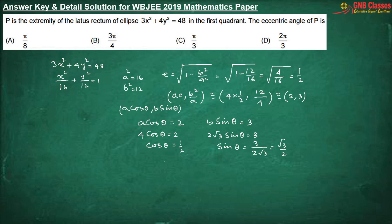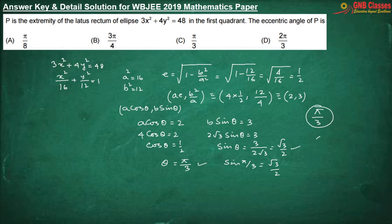From here, we can write that θ = π/3, that is 60°, which also satisfies this equation, because sin(π/3) = √3/2. Therefore, the eccentric angle is π/3. Hence, option C is correct. It is a simple problem of the kind we have done in class.